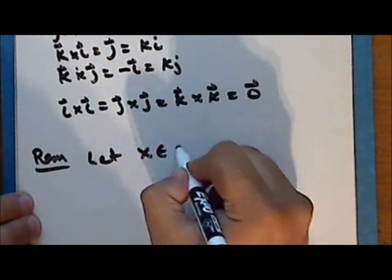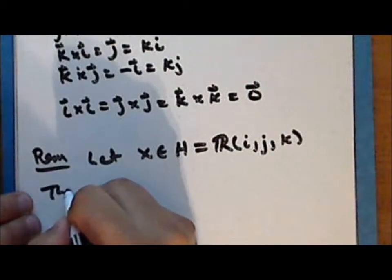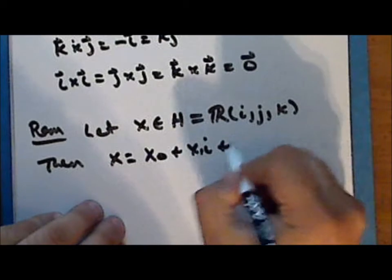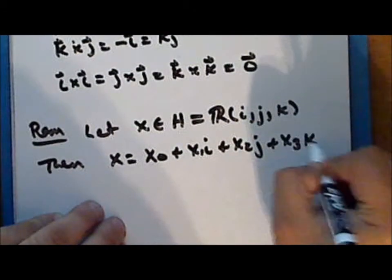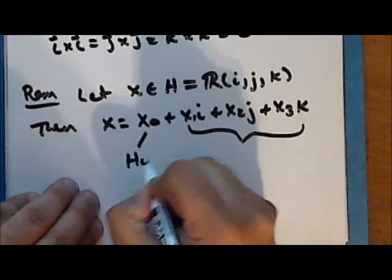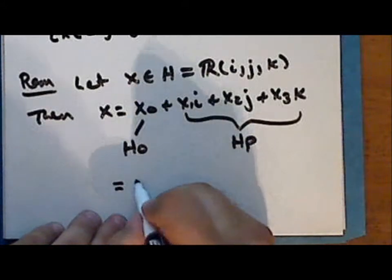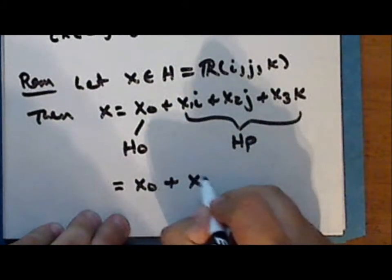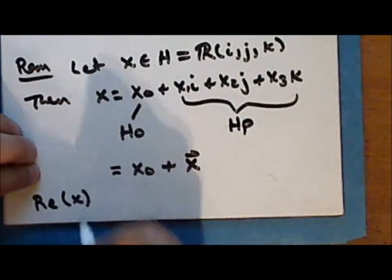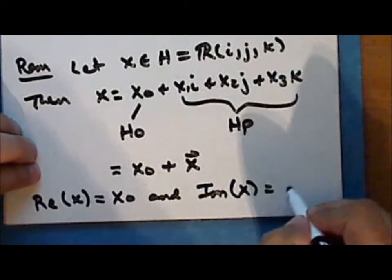Let x be a quaternion, considering the set of quaternions as the algebraic extension of the reals. Then x has the form x₀ + x₁i + x₂j + x₃k. We can consider x as consisting of two components: a purely real component and a purely imaginary component — a scalar x₀ and a three-dimensional vector x, where the real part is x₀ and the imaginary part is the vector x.